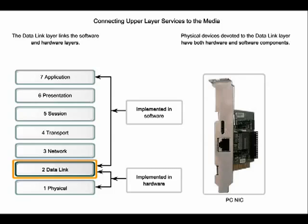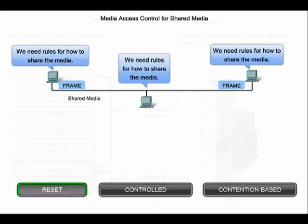The network interface card, or NIC, in each device has both software and hardware components that provide Layer 2 services. The media access control sub-layer regulates the placement of data frames onto the media. It also provides addressing and delimiting of data according to the physical signaling requirements of the medium.